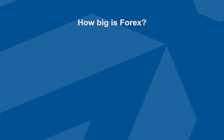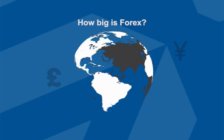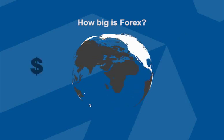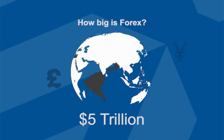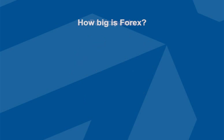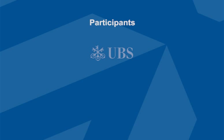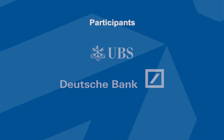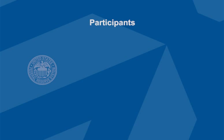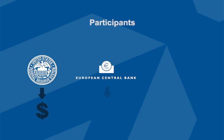One of the most well-known facts about the Forex market is that it's the largest financial market in the world, with a daily turnover of nearly five trillion US dollars. The FX market has several different participants, including investment banks such as UBS and Deutsche Bank, and central banks who monitor the health of their domestic currency — for example, the Federal Reserve who looks after the US dollar, the ECB (European Central Bank) who looks after the Euro, and the Bank of Japan who looks after the Yen.